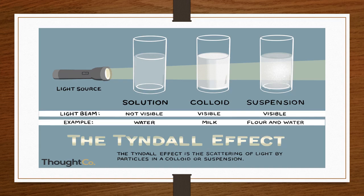Now let us talk about one more very important property: the Tyndall effect. Tyndall effect means the scattering of a beam of light when it falls on any particle. Let us study how a beam of light appears when it passes through these three different types of solution.